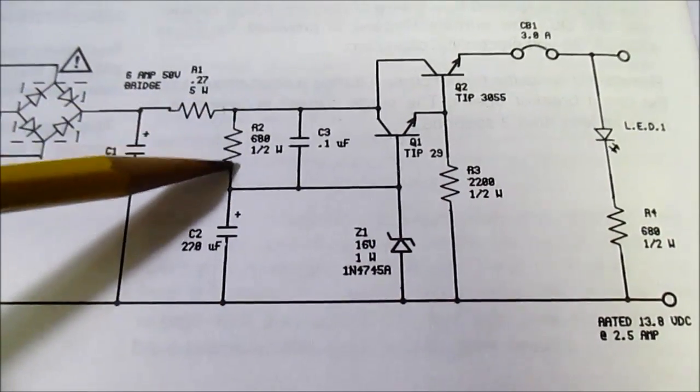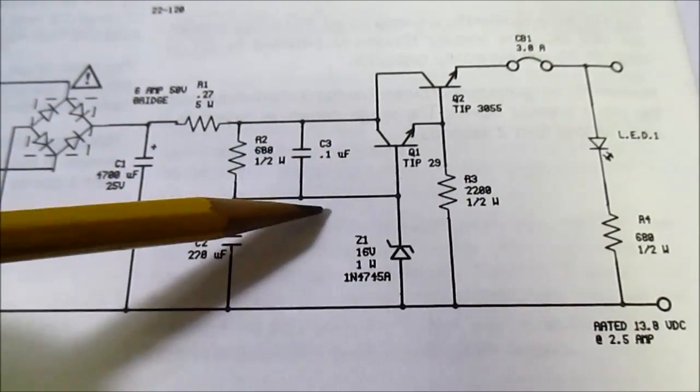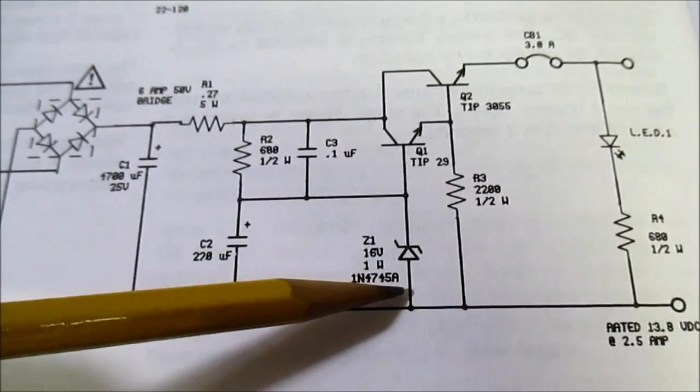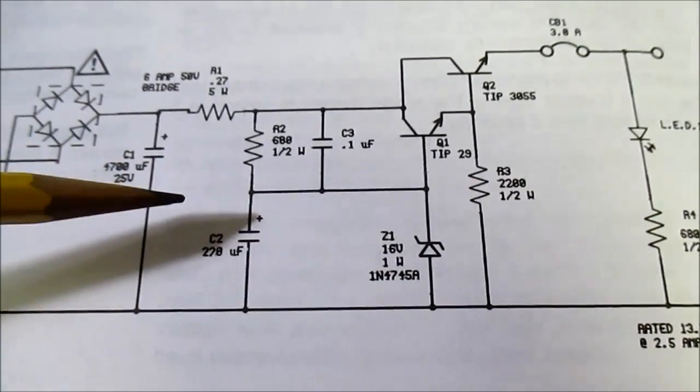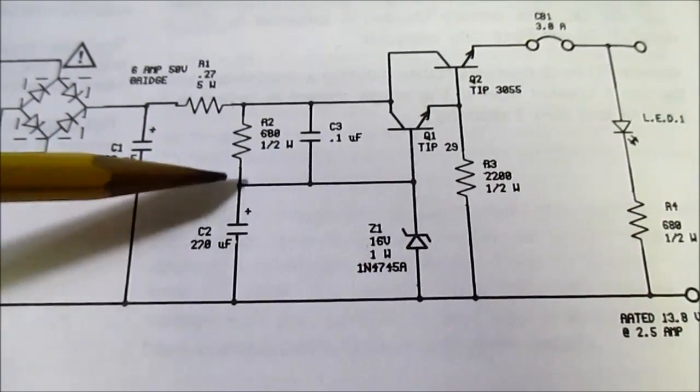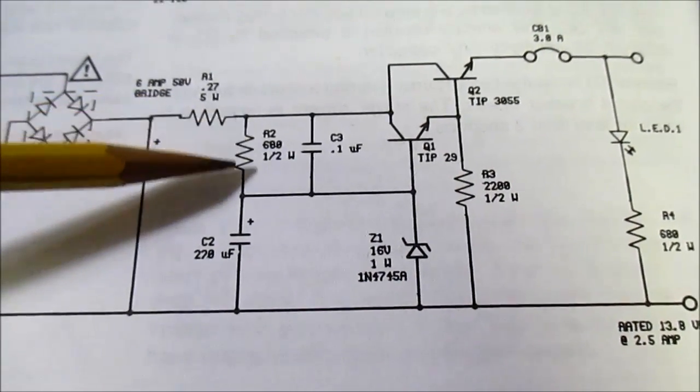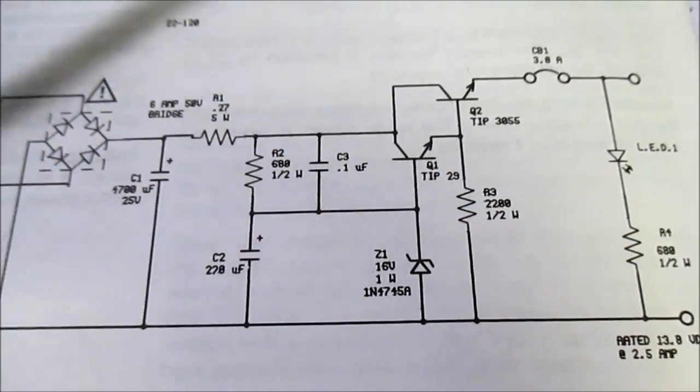Well this resistor here biases the Zener diode. You have to put enough current through that Zener to make it work and show that proper Zener voltage. And there's a little ripple filter cap on here. You don't want any of the ripple getting into this circuit here because it'll just amplify that ripple.